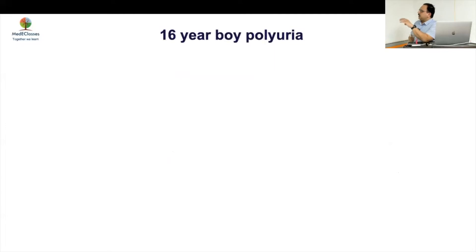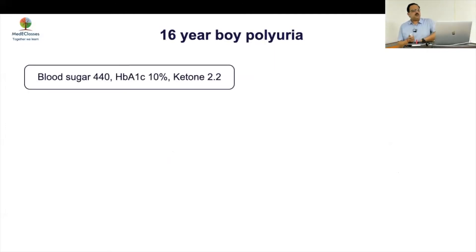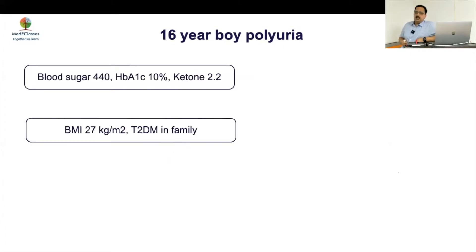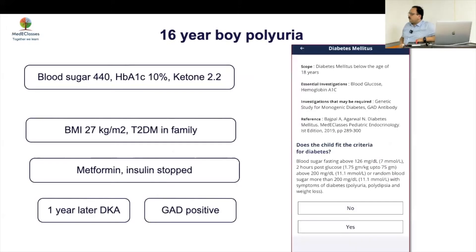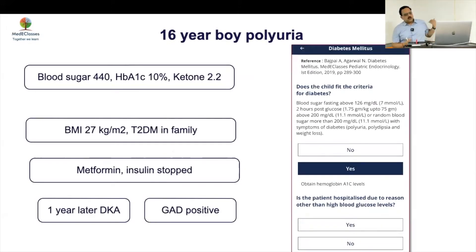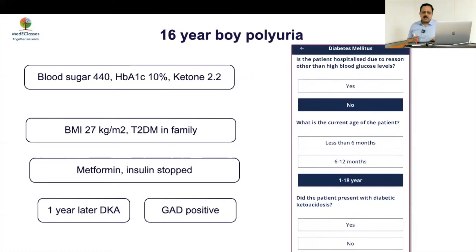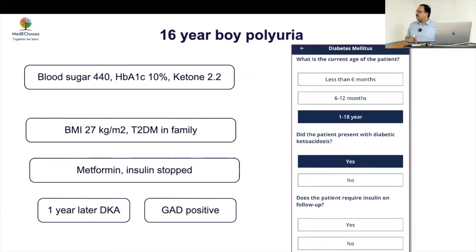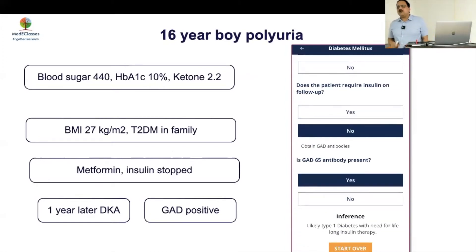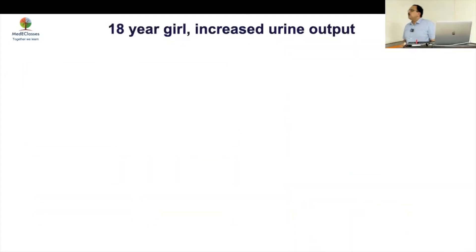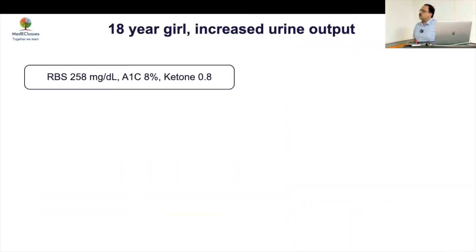Don't do investigations in everybody — just classify. Case 1: a 16-year-old with polyuria presented with DKA, but because he was obese, we thought this could be non-Type 1 diabetes and stopped insulin. He presented with DKA again later. Per our algorithm, if a child has hyperglycemia aged 1–18 with DKA and does not require insulin, a GAD antibody should have been done — that could have prevented the recurrence.